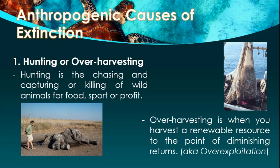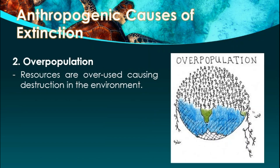The second anthropogenic cause is overpopulation. In overpopulation, resources are overused, causing disruption in the environment. As the human population increases, we tend to use more resources, destroying some of them, which leads to the decrease in populations of plants and animals. We also occupy the spaces intended for animals, as overpopulation drives humans to search for areas to build homes and residences.